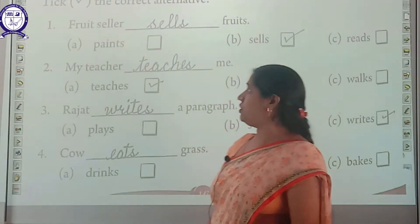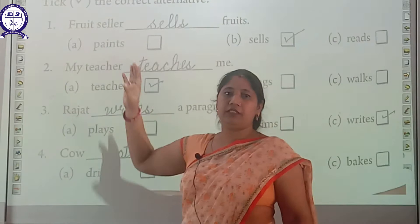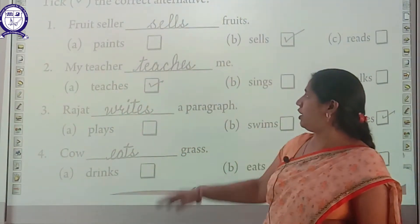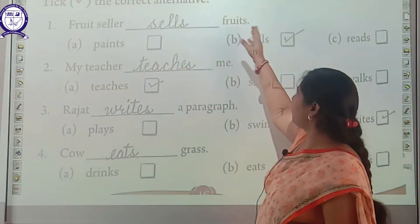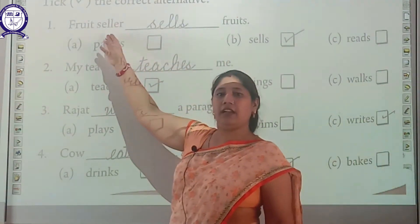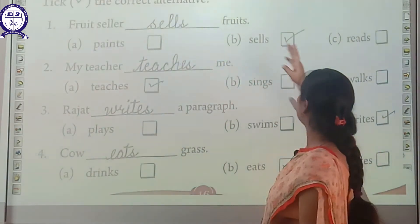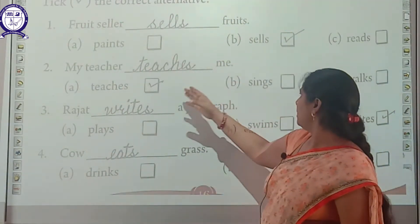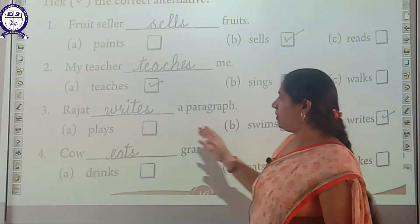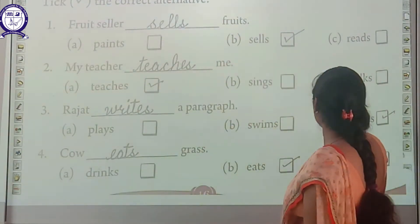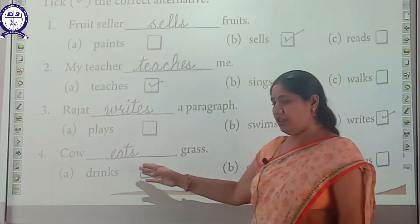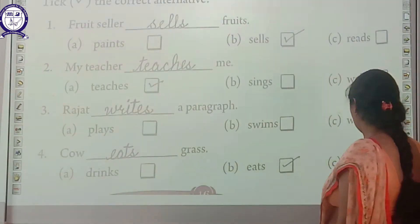Now take the correct alternatives — these are multiple choice questions and you have to choose the right option. The fruit sailor dashes fruits: paints? No. Sails? Yes — sailor sails. My teacher dashes me: teaches, sings, or walks? Teaches. Rajat dashes a paragraph: plays, swims, or rides? Rides. Cow dashes grass: drink? No. Eats? Yes. Bakes? No.